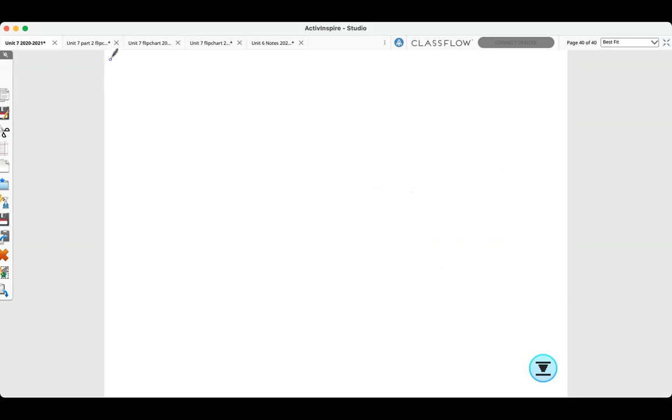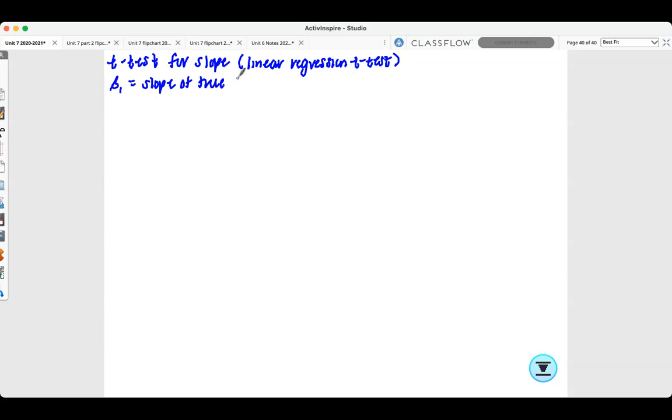First, we need to name our test. This is a t-test for slope, or a linear regression t-test. Beta 1 is the slope of the true least squares regression line between math scores and anxiety levels.